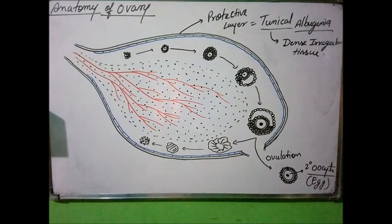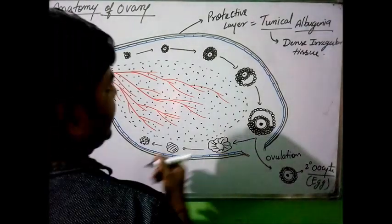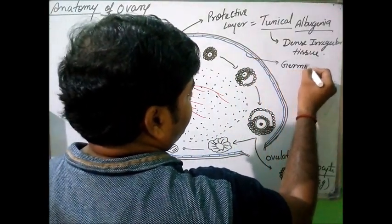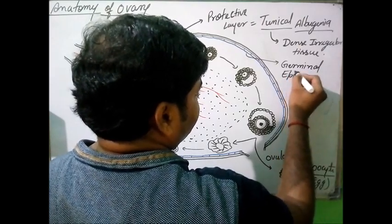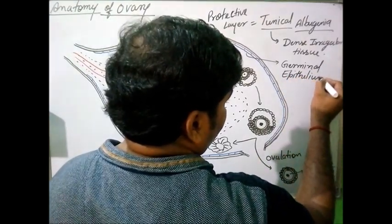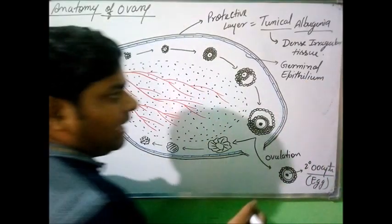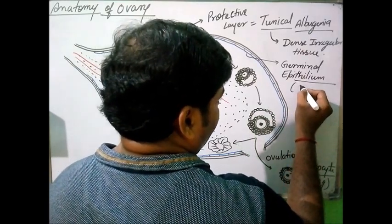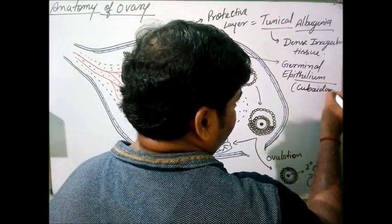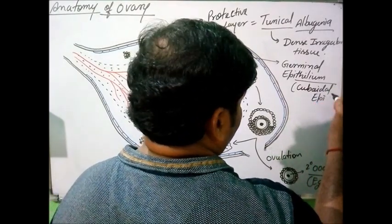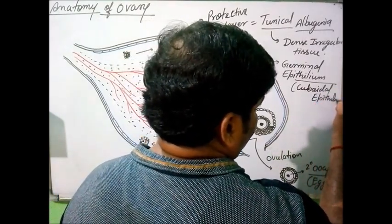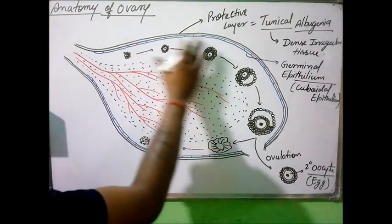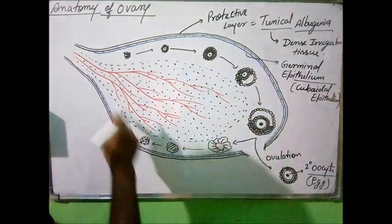Just below the tunica albuginea, the blue line you can see is the germinal epithelium. This germinal epithelium, according to epithelial tissue classification, is actually cuboidal epithelium.